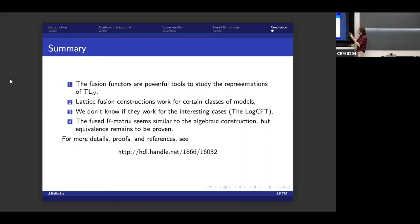And finally, the fused R matrix, it seems very similar to the algebraic construction because this whole deal of projecting parts of the system to a different representation, that's the same thing that the fusion quotient does, really. It's pretty obvious to me, actually, that there is some relation between the two, but it's not obvious at all what this relation is and if it can be interesting for anything at all. And for more details, proofs, references of everything I've said, you can go have a look at my thesis.